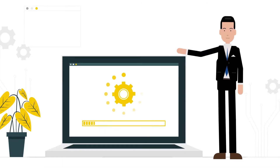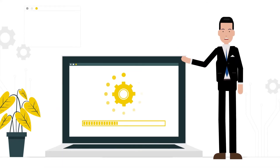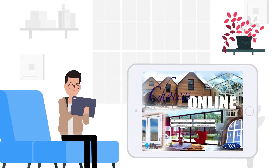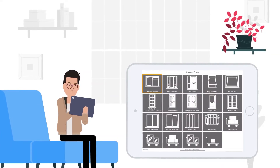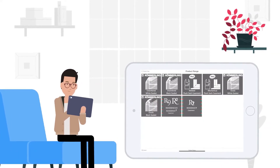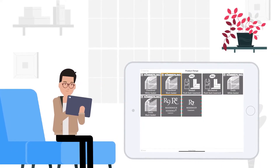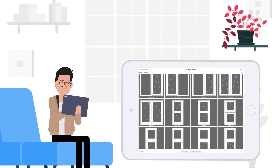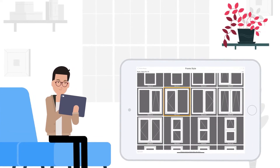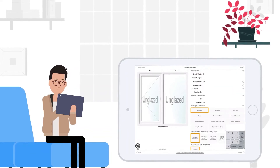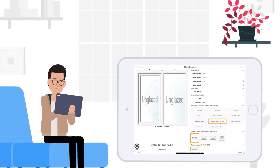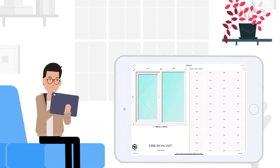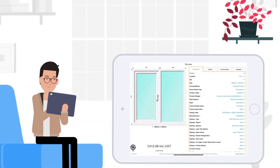Just giving you a concept of how it works: you have to open the software, click Create New Quotation, select the product type — supposing it to be a window — then Product Range. After it, choose the frame style you like. After you have chosen the product you want, now you can choose the color, dimensions, glass type, pattern, handle style, and much more, as per your choice.